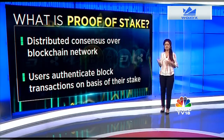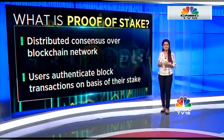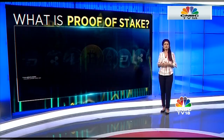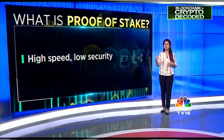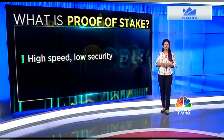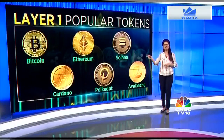Proof of Stake is a mechanism that features distributed consensus over the blockchain network. Users can authenticate block transactions on the basis of their stake. Proof of Stake wins over Proof of Work in terms of transaction speed, but loses in terms of security.